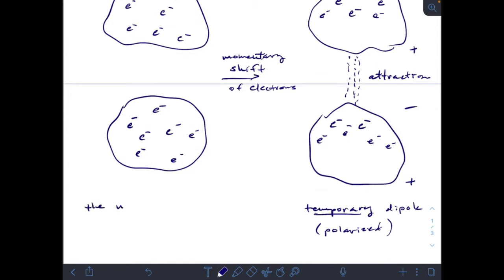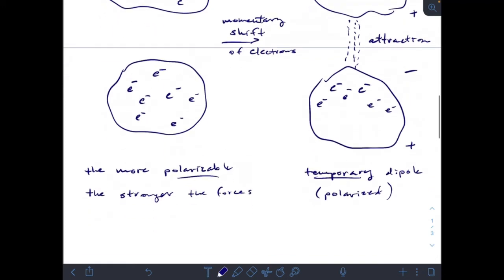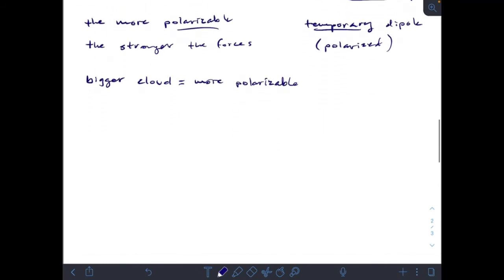So with this temporary polarization, the more polarizable, the stronger the forces. And so how do we get a more polarizable electron cloud? A bigger cloud is more polarizable. If I have more electrons on one side of an area, that means that I have more negative charge. So a bigger cloud is more polarizable. If it's more polarizable, I have stronger forces. So size is one aspect of dispersion strength.